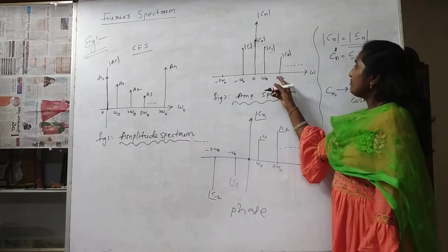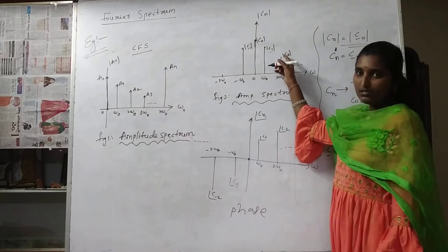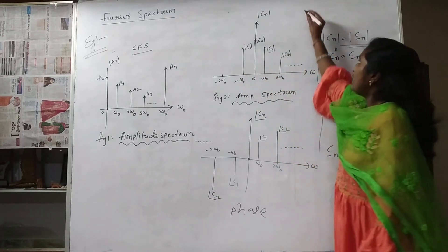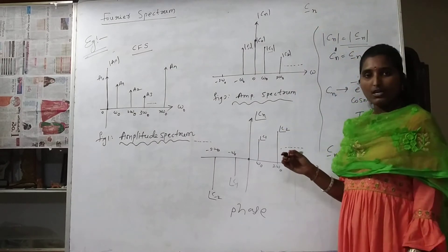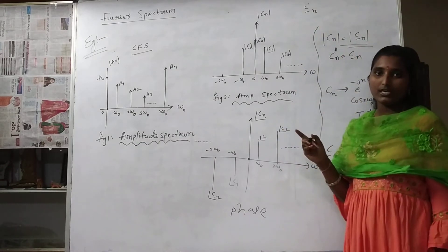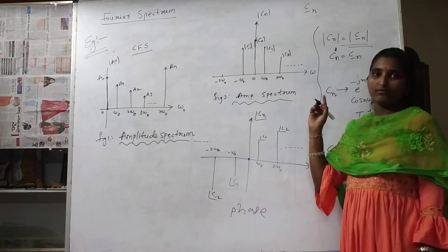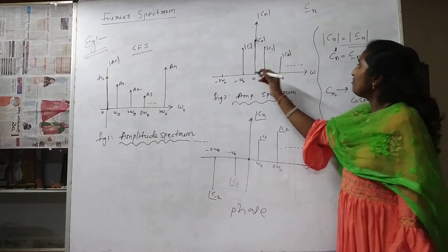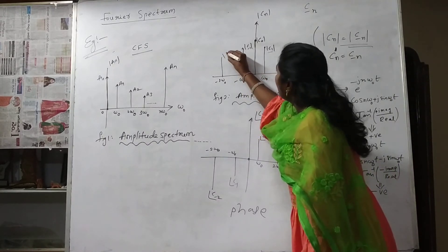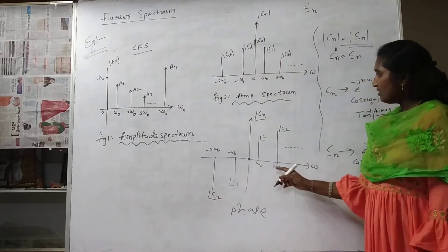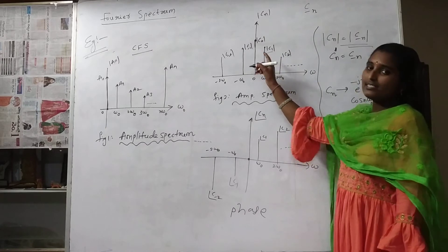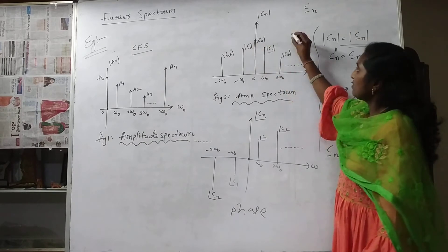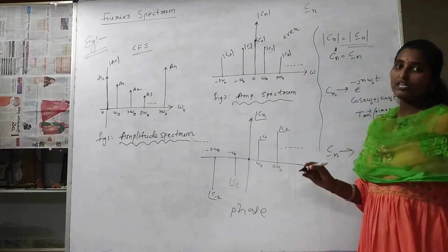For example, if I calculate mod C₂ at 2ω₀, there is no need to calculate C₋₂ separately because of the standard relation. The amplitude spectrum is symmetric about the y-axis, which means it is an even signal — even spectrum.